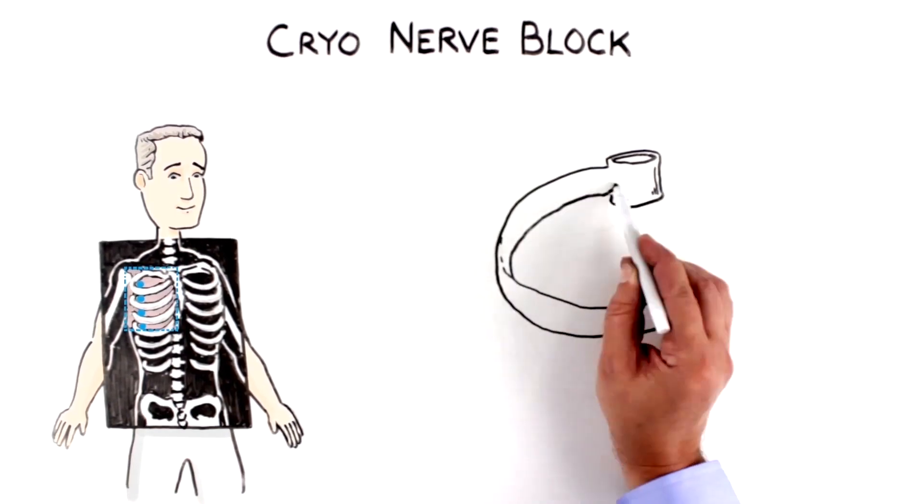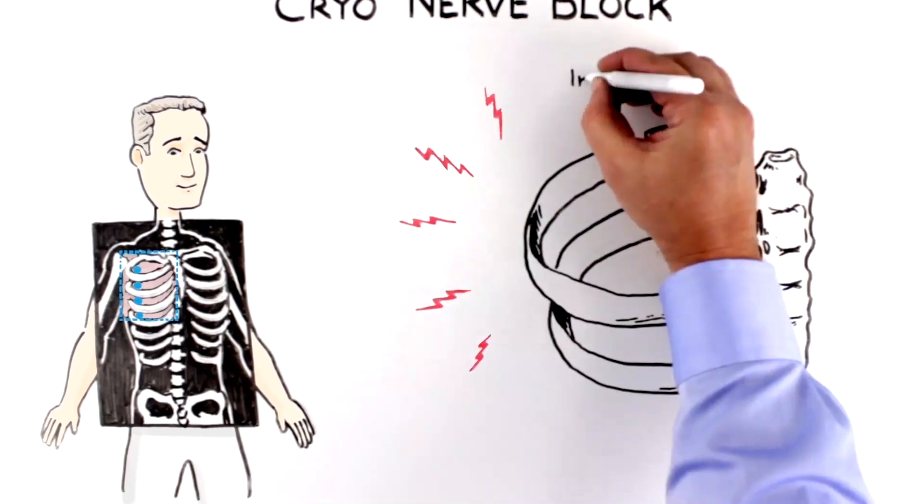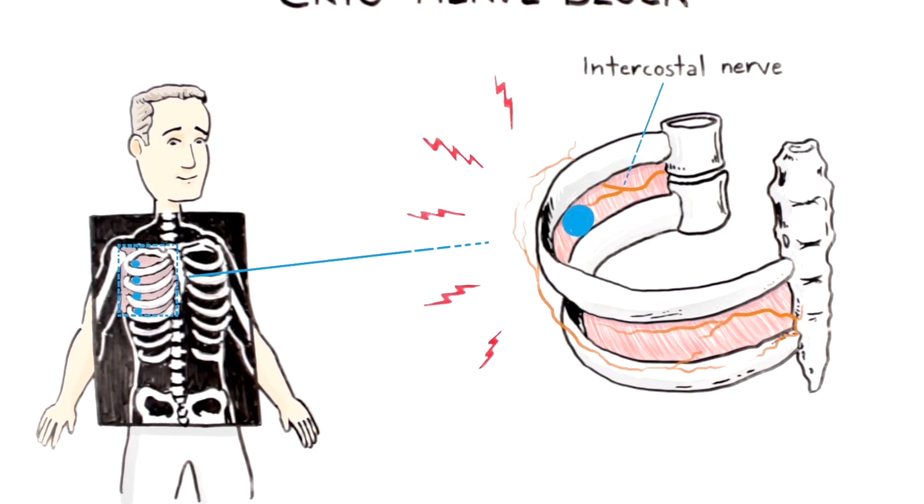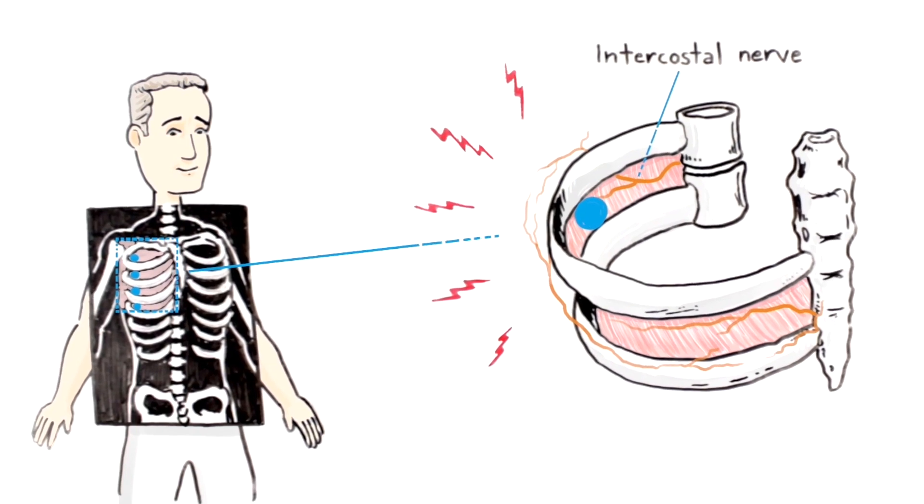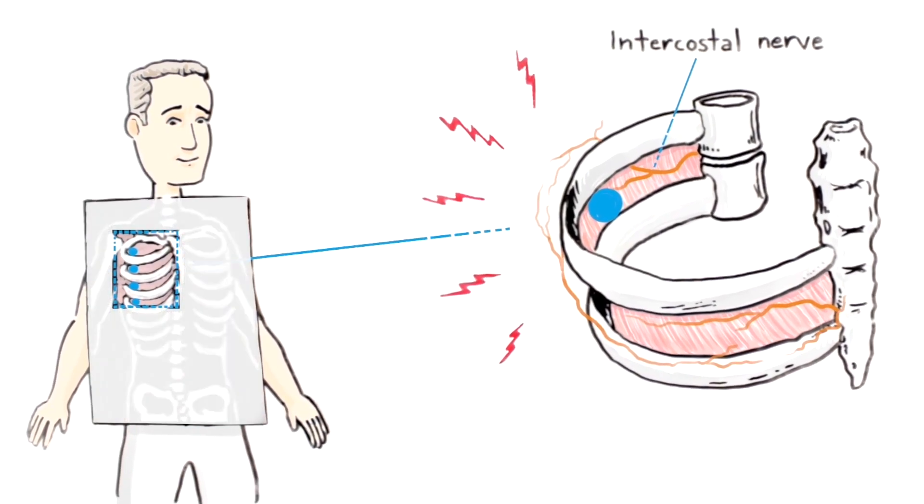These nerves are the primary source of pain after chest surgery, and cryo-nerve block helps by temporarily shutting off this nerve. With cryo-nerve block, you'll have a sensation of numbness after surgery, which means a lot less pain.